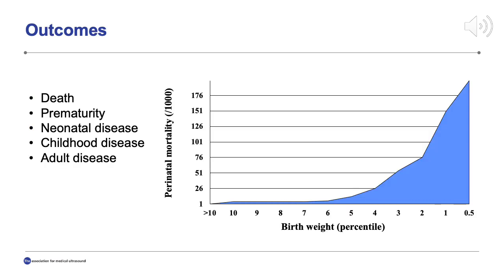We care about fetal growth restriction because it is associated with subsequent poor outcomes, including possible intrauterine or neonatal death. The chart on this slide demonstrates the inverse correlation between fetal weight and perinatal mortality. A fetus found to have an estimated weight less than the 10th percentile has a 1.5 percent risk for intrauterine fetal demise, and a fetus with an estimated weight less than the 5th percentile has a 2.5 percent risk for fetal demise. As you can see, there is a sharp increase in the rate of perinatal mortality once a fetus is found to have an estimated weight less than the 5th percentile.